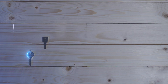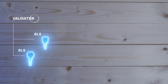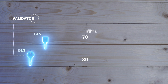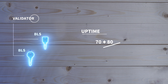For example, a validator has two elected BLS keys, and each of the keys is presented 100 blocks to sign. In the final tally, the first key signed 70 blocks and the second key signed 80 blocks. Overall, the validator's uptime is (70 + 80) divided by (100 × 2), which is 75%.